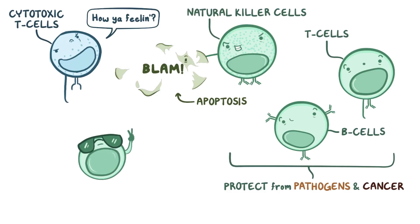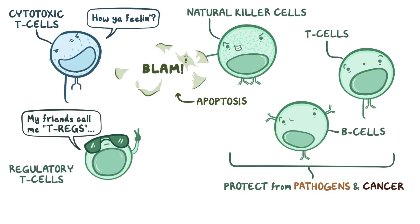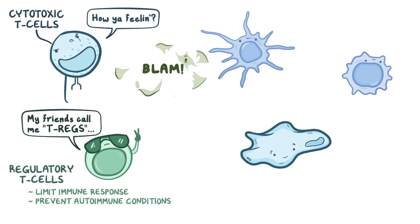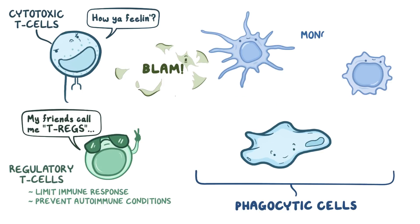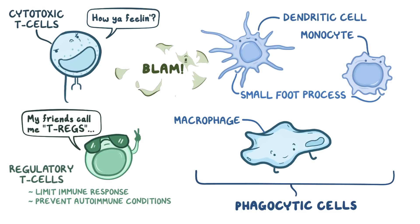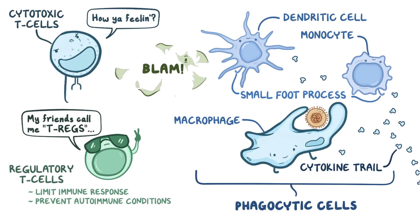There are also T-cells called regulatory T-cells, or T-regs, which down-regulate the other T-cells to limit the immune response and prevent autoimmune conditions from arising. T-regs also rely on reorganizing their cytoskeleton to function normally. Finally, there are the phagocytic cells like monocytes, macrophages, and dendritic cells, which form small-foot processes to make their way towards cytokines. These phagocytic cells are like little bloodhounds following a cytokine trail. These cells also perform phagocytosis to swallow up debris, dead cells, and bacteria so that it can be processed and destroyed.